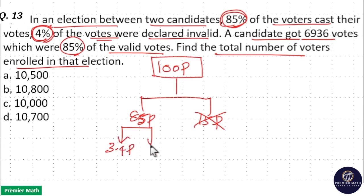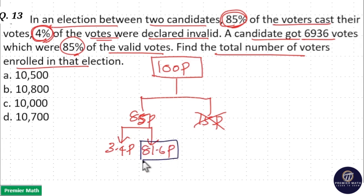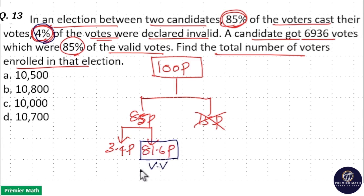Now the remaining valid votes are equal to 85 minus 3.4. That is 85 minus 3 equals 82, and 82 minus 0.4 equals 81.6. So the total valid votes equal 81.6 parts — meaning out of 85 parts, 4% is declared invalid, so the remaining 96% which is 81.6 parts is the total valid vote.